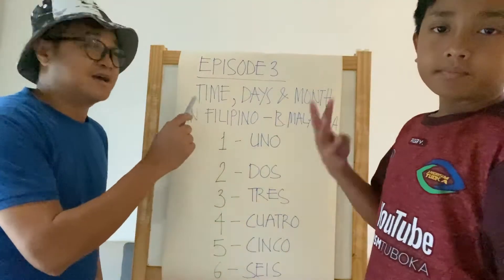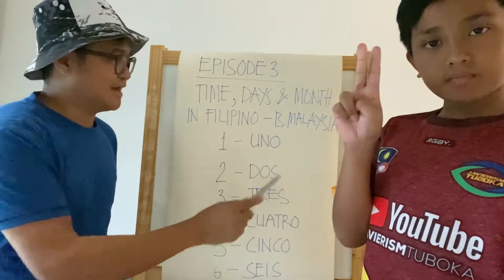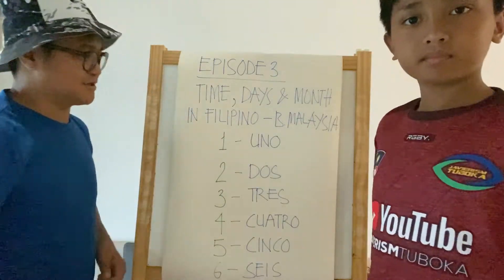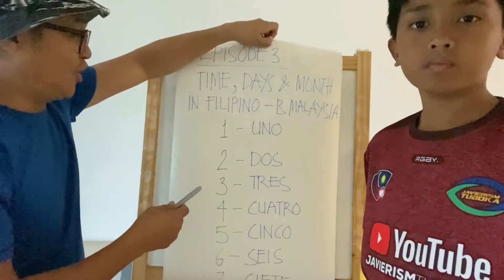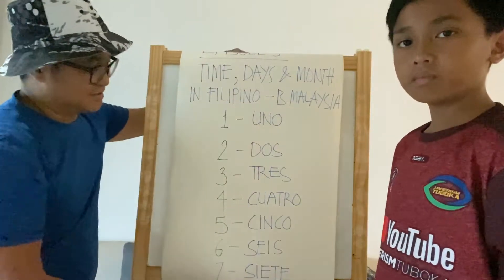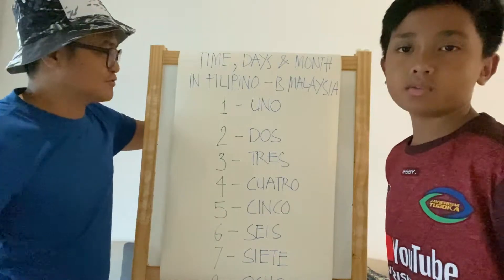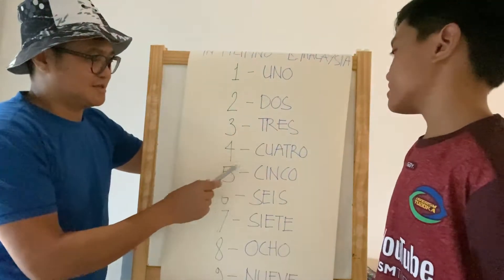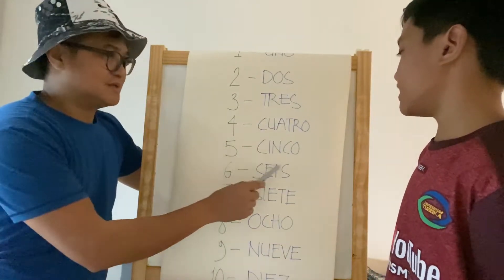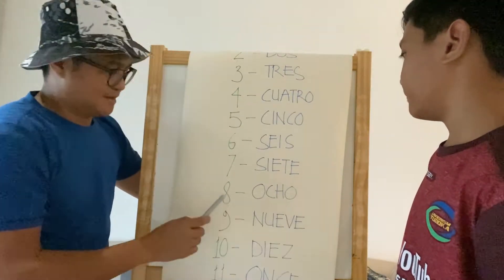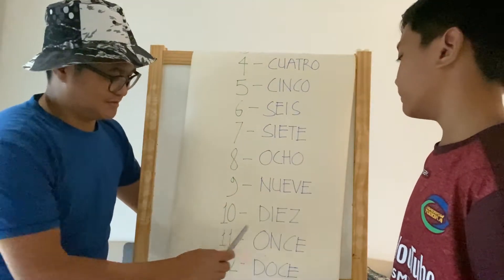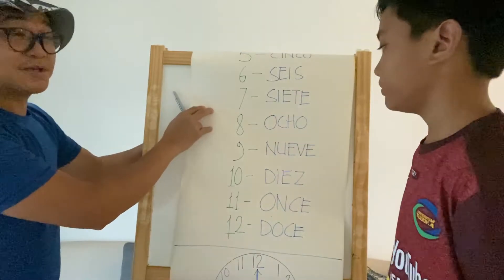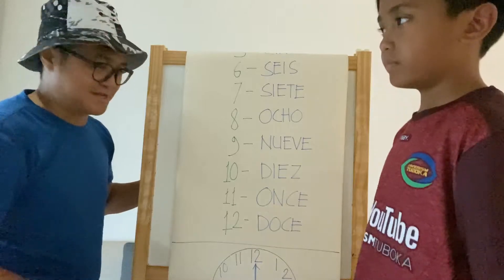Let's jump straight into episode three: time, days, and months. We are translating into Filipino and Bahasa Malaysia, using English as our basis. When you read these numbers, you will probably notice that the words are in Spanish. We only count until 12 because the clock only has 12 hours.